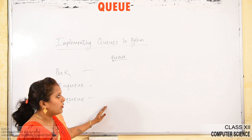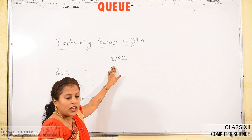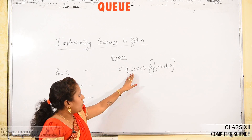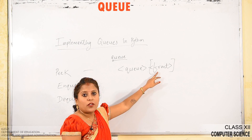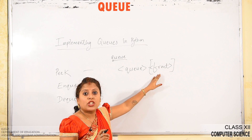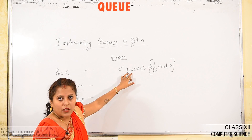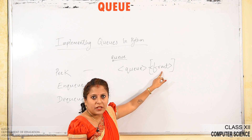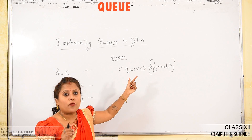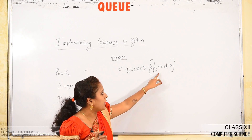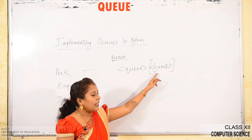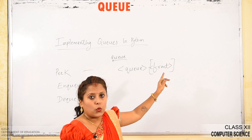If I want to perform a peak operation and the list name is Q, you write Q[front], where front is an integer indicating the position of the first value at the front end. Writing Q[front] lets you inspect the first value in the queue at the front end — that is the peak operation.